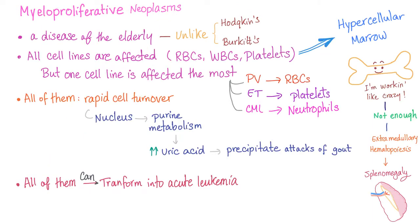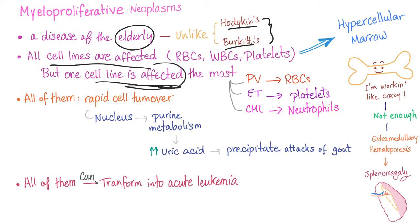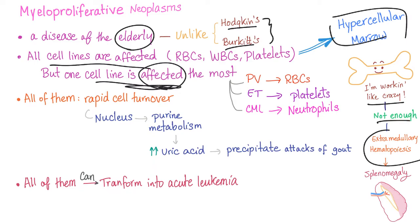Myeloproliferative neoplasms are a disease of the elderly, unlike Hodgkin's or Burkitt's, which are diseases of the young. All cell lines are affected, but one is dominant — that's why the bone marrow is hypercellular, working like crazy. Sometimes it's not enough, and we need extramedullary hematopoiesis, usually in the spleen, leading to splenomegaly.